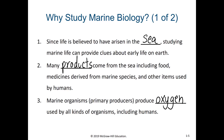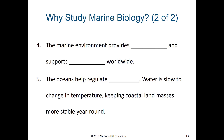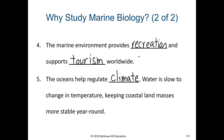The marine environment also provides recreation and supports tourism worldwide. And lastly, oceans play a significant role in helping to regulate climate. Because of the high specific heat of water, water is very slow to change in temperature, and this helps keep coastal land masses more stable year round. These are some of the reasons why we study marine biology in the first place.